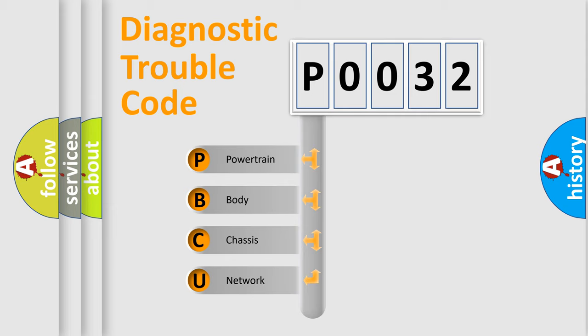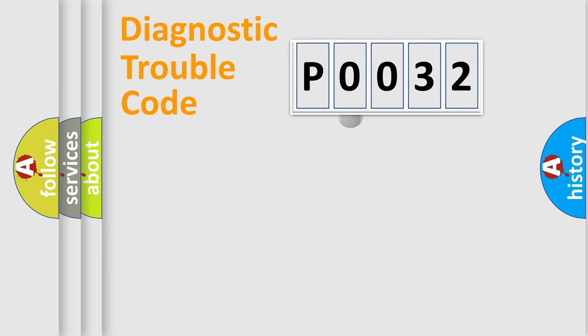We divide the electric system of automobile into the four basic units: Powertrain, Body, Chassis, Network. This distribution is defined in the first character code.